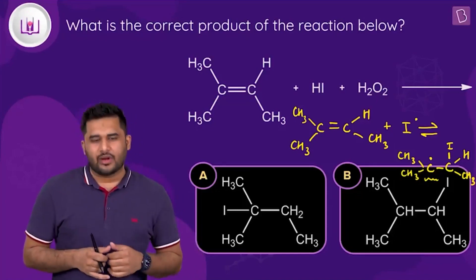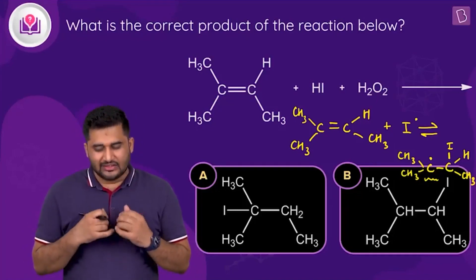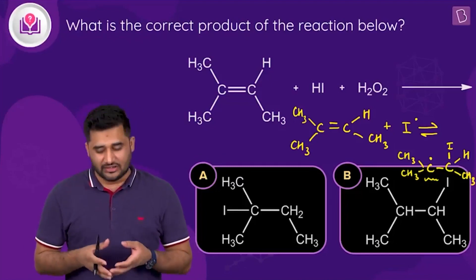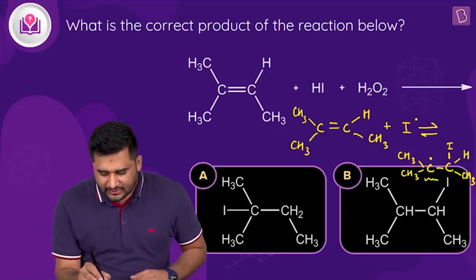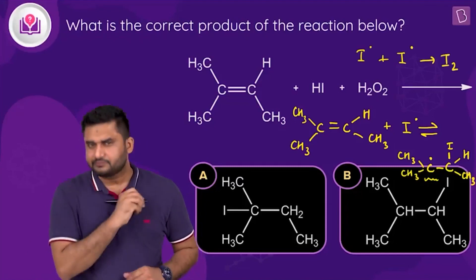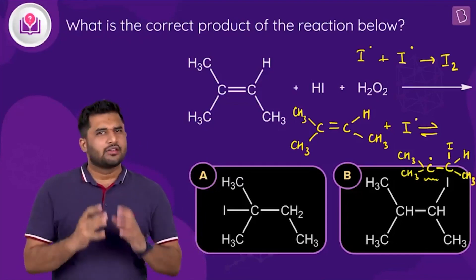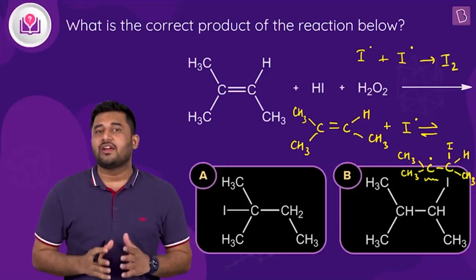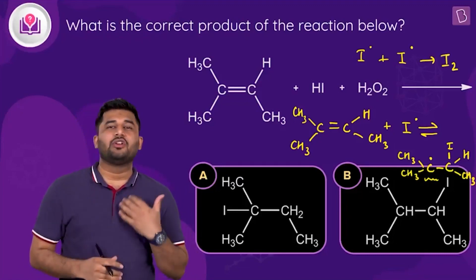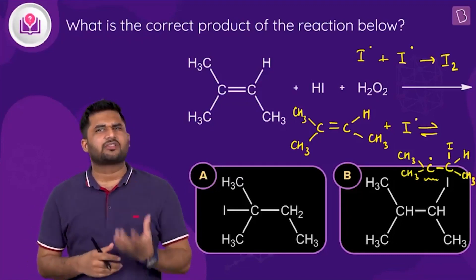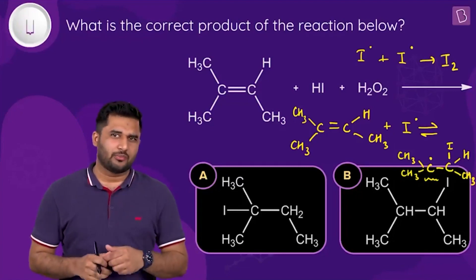The second reason why HI does not follow anti-Markovnikov addition is that the iodine radical has a high tendency to combine with another iodine radical to form I₂. These are the two reasons that explain why, with HI, anti-Markovnikov addition — the Kharash effect or peroxide effect — is not observed.